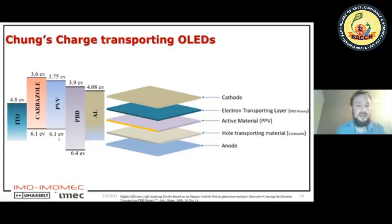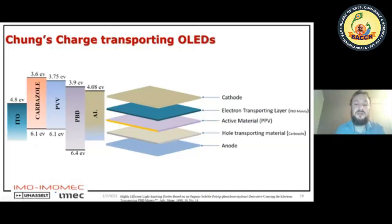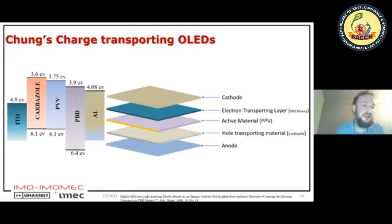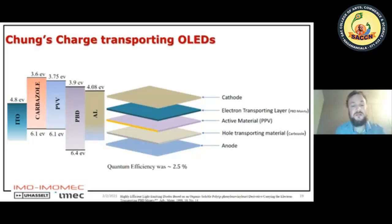Looking at the energy levels: jumping from 4.08 to 3.75 eV is a big jump, but putting PBT at 3.9 eV in between helps the electron move easily toward the PPV. On the hole side, going via carbazole at 6.1 eV to the PPV is easier. Additionally, PBT at 6.4 eV acts not only as an electron transport layer but also as a hole blocking layer, keeping holes and electrons inside the PPV so they can find each other, form an exciton, and generate light. This optimized stack achieved a quantum efficiency of 2.5%.